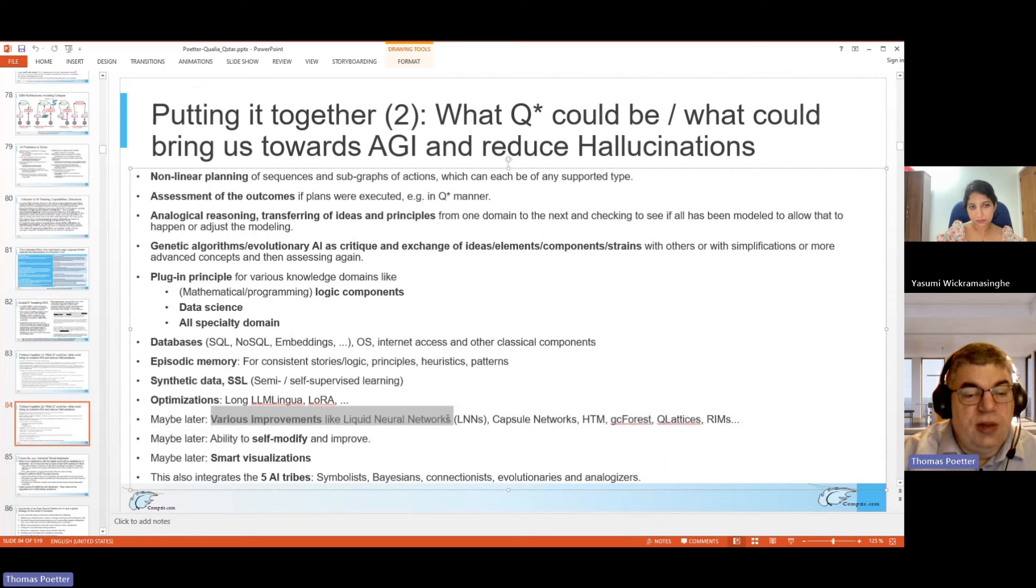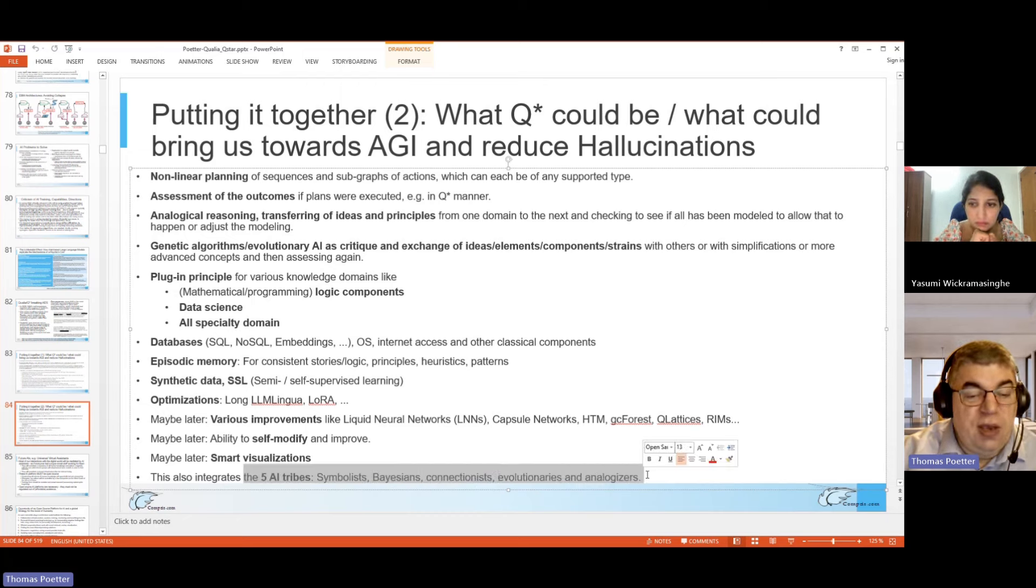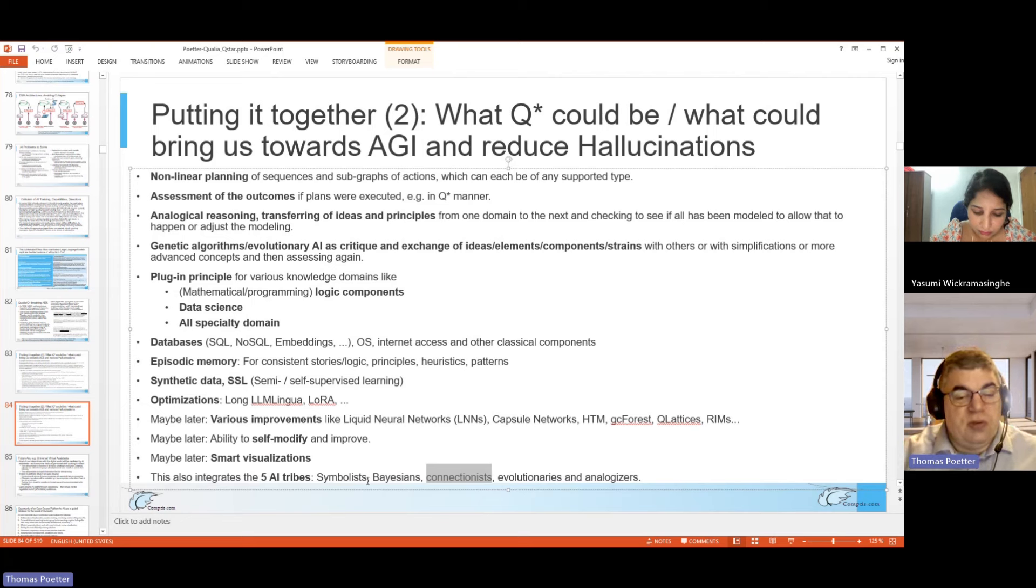We could explore synthetic data more and some learning and optimizations like long, lingua, LoRA, and maybe later various improvements like liquid neural networks, capsule networks, hierarchical temporal memory, GC Forest, Q-Lattices, RIMs. So these are basically new AI models that have been proposed. This LoRA stands for Low-Rank Adaptation, a training method that's very promising. And maybe later the ability to self-modify, but they should be careful because then an AI could possibly escape and get into the world of the internet, and that could become dangerous. And then we could possibly have smart visualizations and generally find synergies between the ideas of the five main AI tribes, which are symbolists, Bayesians, connectionists, this is what the current deep learning is about, evolutionaries, and analogizers. Currently we're mainly in the connectionist domain with deep learning and large language models. However, these other four domains have some interesting insights.